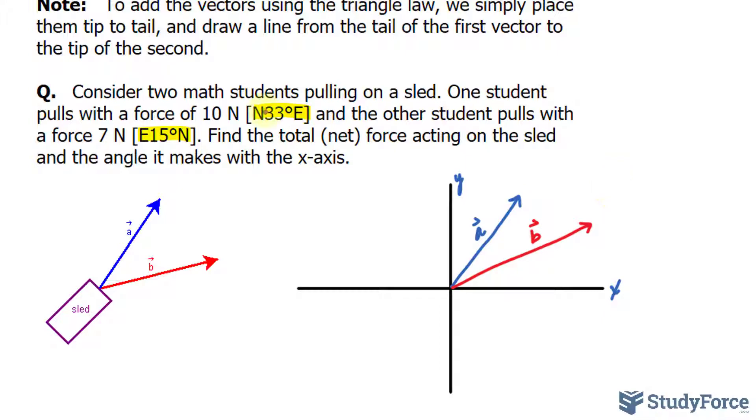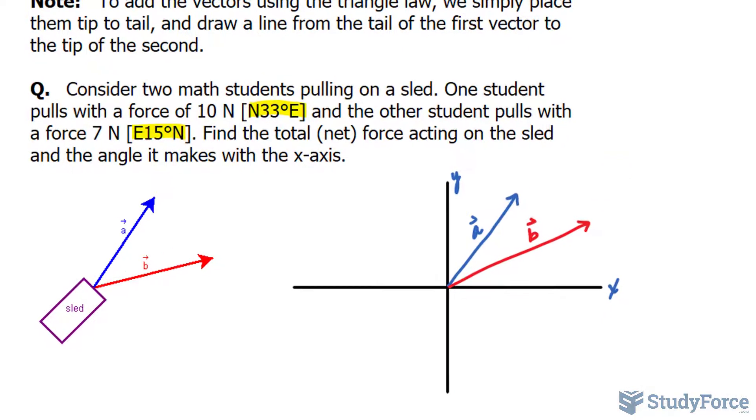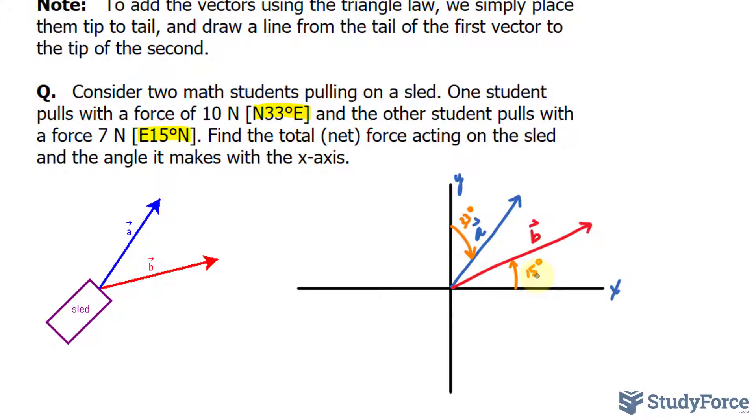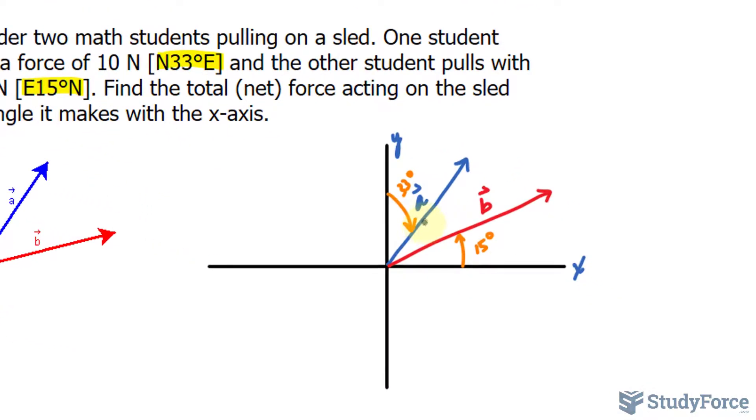That being said, starting north and heading east 33 degrees means that this part from here to here is 33 degrees. If we're starting east and heading north 15 degrees, that suggests that the angle from here to here is 15 degrees. Now normally when we add vectors up, we like to do it in reference with the x-axis. So rather than saying that this is 33 degrees, let's find out the angle from here to here. And that can easily be done by taking 90 and subtracting 33, which equals 57 degrees. Notice how 15 degrees is already in reference to the x-axis. So we don't need to do that for vector b. We know now that from here to here is 57 degrees and from here to here is 15 degrees.